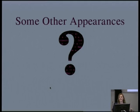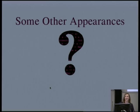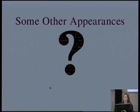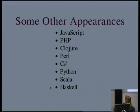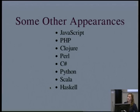Where else have we seen lambdas and higher-order functions? Python, if you have one-line lambdas. Perl, Haskell of course — Haskell's always on the list. Even JavaScript, PHP, all over the place. Even Java's almost caught up with this — almost, hopefully this year.